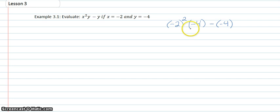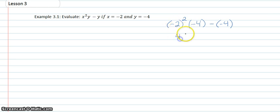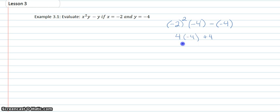I can go ahead and start using the order of operations to solve my problem. I want to use this exponent here first, so negative 2 squared is 4. Then 2 negatives will make a positive. 4 times negative 4 is negative 16, plus 4. That is negative 12. And then we've evaluated the expression.